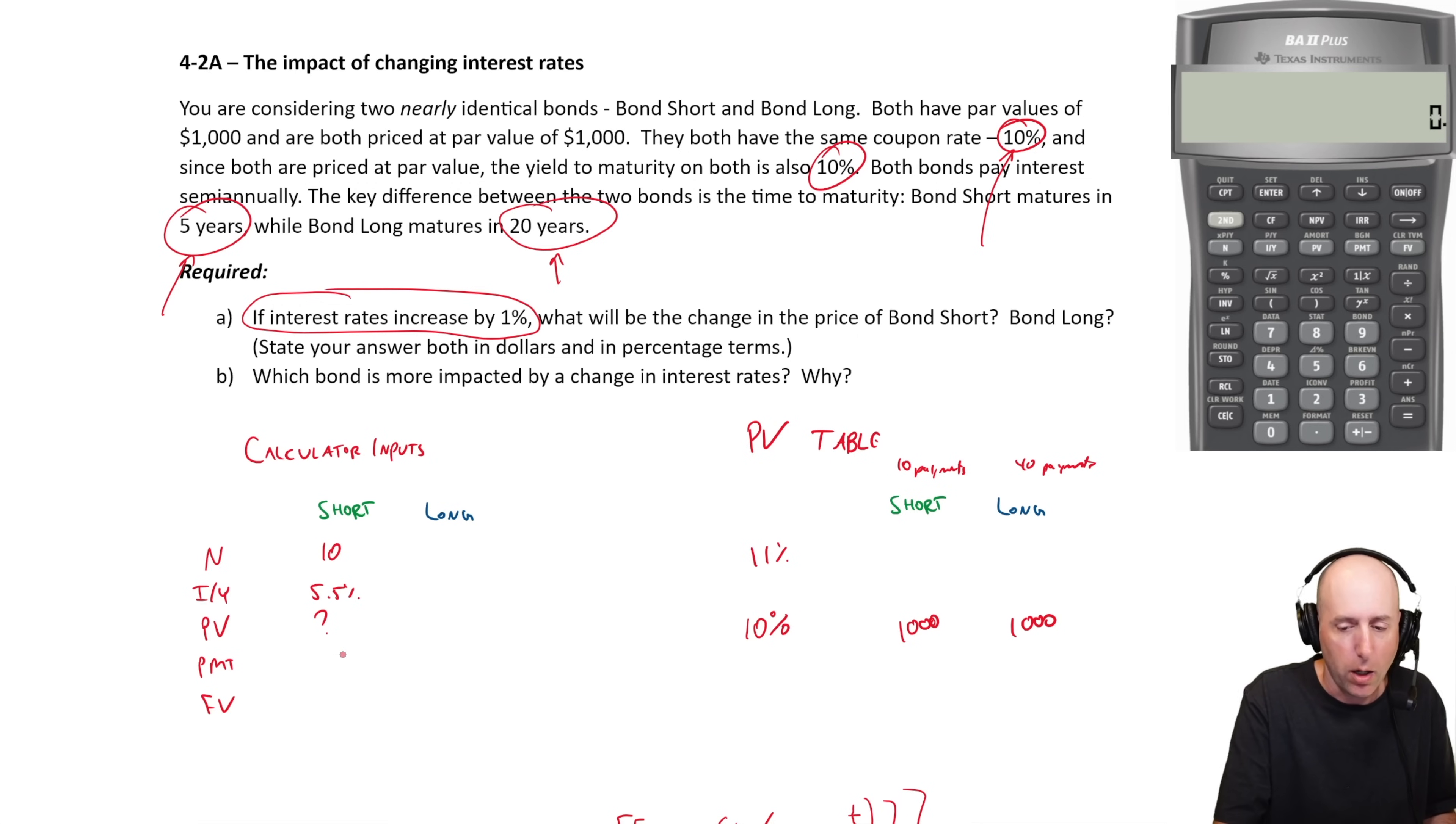PV is what we don't know. Our PMT, what's a thousand dollar bond times 10? It's a hundred dollars a year. But remember bonds are all semi-annual, so the PMT is 50.